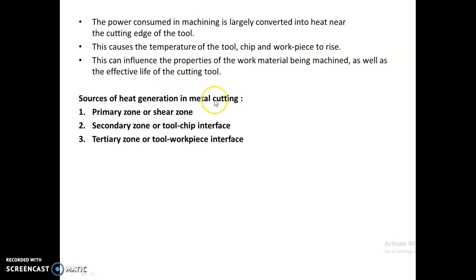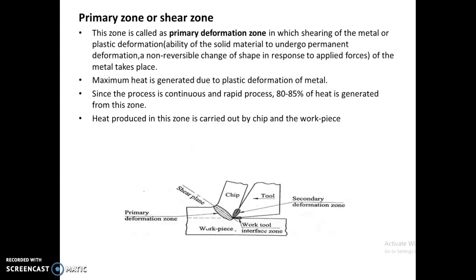There are three sources of heat generation in metal cutting: the primary zone or shear zone, the secondary zone or tool-chip interface, and the tertiary zone or tool-work interface. Looking at this figure, we can see the workpiece material, the chip formation, and the tool, with three zones identified: the primary zone, secondary zone, and tertiary zone.